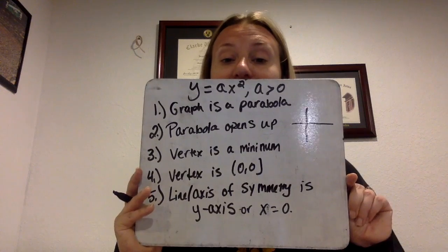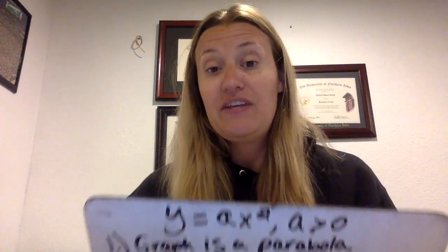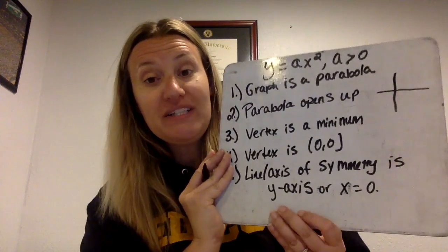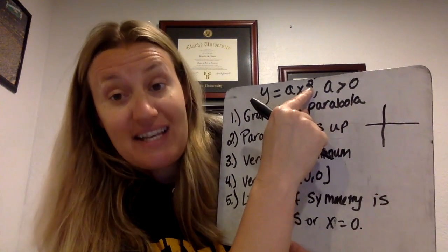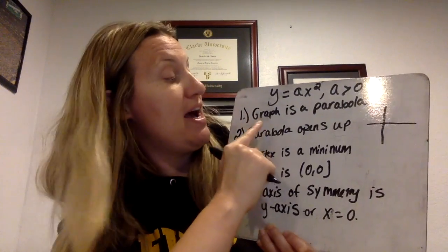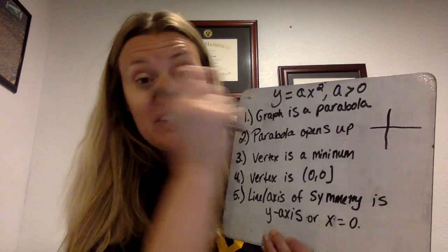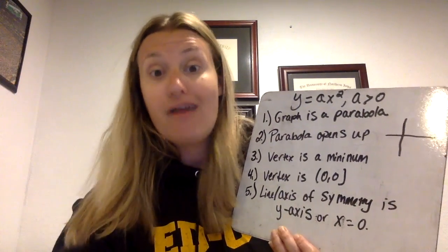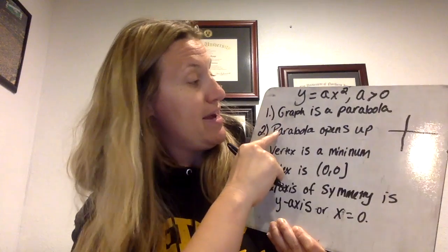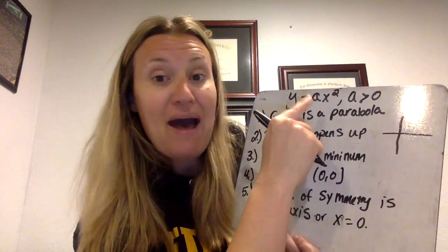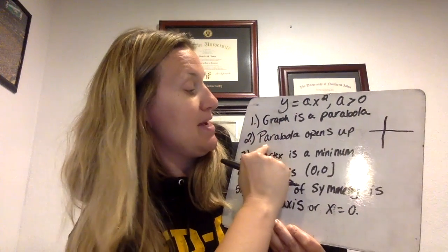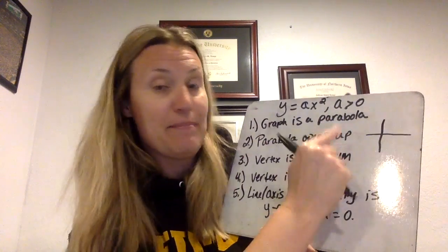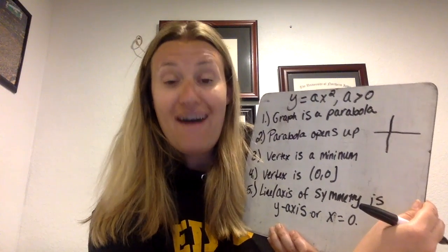The first characteristic is the obvious one: because it is a second degree equation, it's a quadratic, so the graph is going to be a parabola — a u-shaped graph. And because a is positive, if you remember I said the graph could open up or down, a being positive tells me immediately that my parabola will open up.